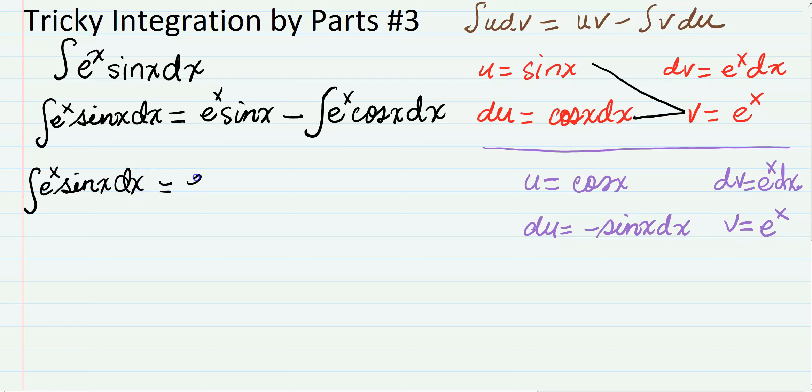We would say minus, so the purple part here is going to be minus e to the x cos(x), right, minus minus negative e to the x sin(x).